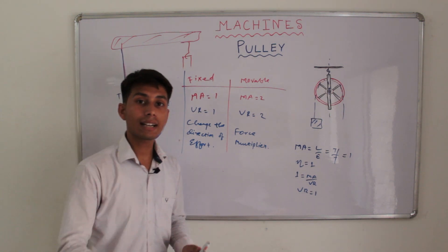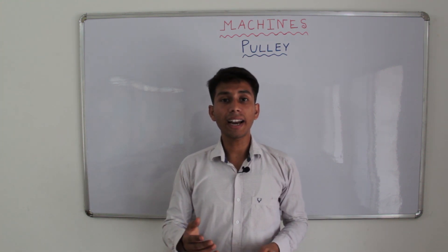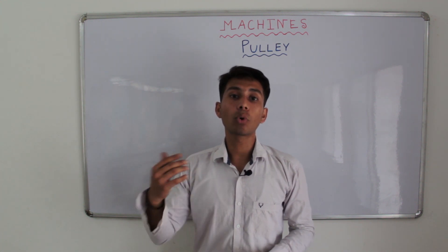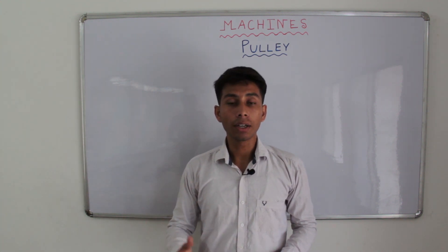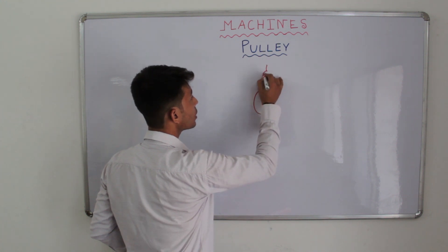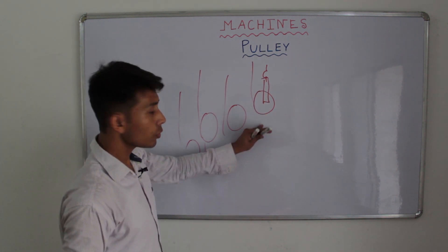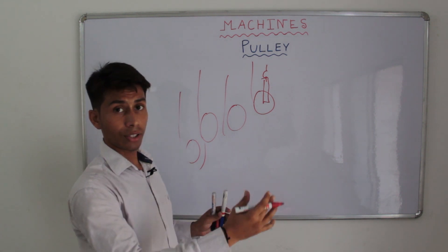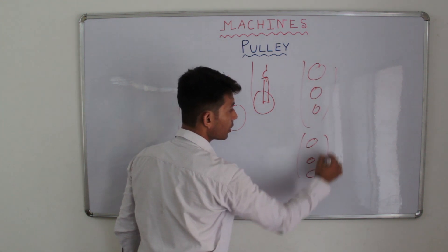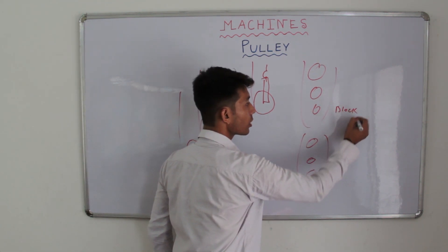We will learn about the block and tackle system next. We have seen that mechanical advantage can be 2 in case of a single movable pulley, but in case of lifting heavy weights we need mechanical advantage to be more than 2, and for that we need a combination of pulleys. Pulleys can be arranged in two ways: keeping one pulley fixed to a rigid support and using multiple movable pulleys, or we can arrange pulleys in two blocks — one block fixed and the other block movable. This is known as the block and tackle system.